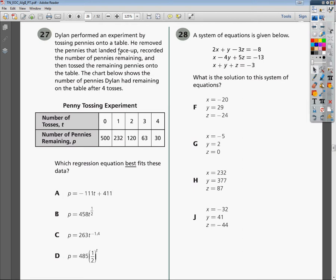The question said Dylan performed an experiment by tossing pennies onto a table. He removed the pennies that landed face-up, recorded the number of pennies remaining, and then tossed the remaining pennies onto the table. The chart below shows the number of pennies Dylan had remaining on the table after four tosses.